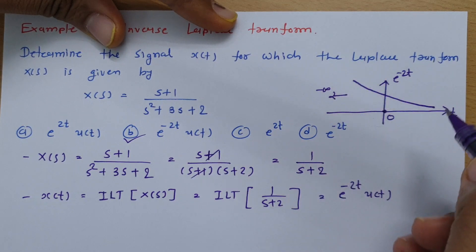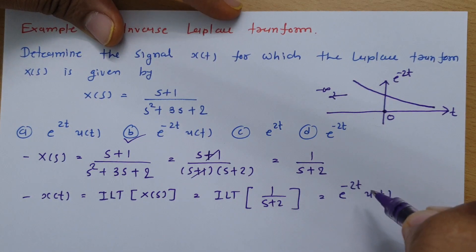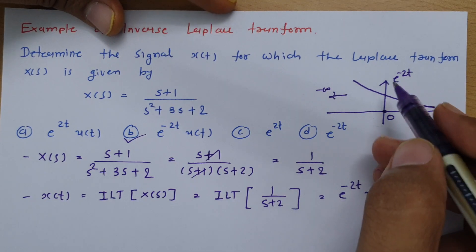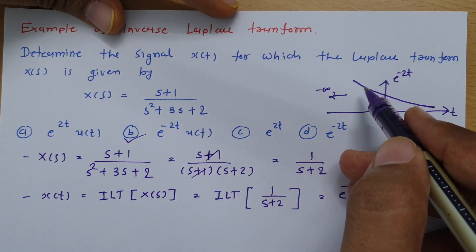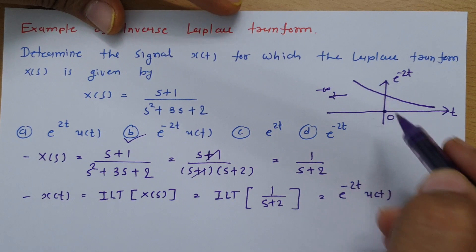So this magnitude will go towards infinity. So if you don't choose u(t) here, in that case it will violate the condition of Dirichlet.